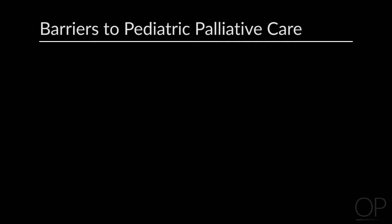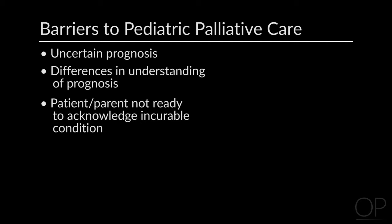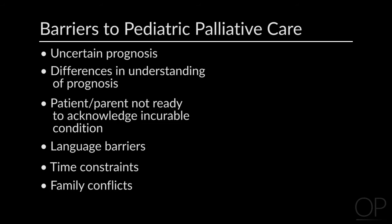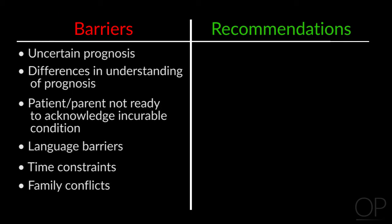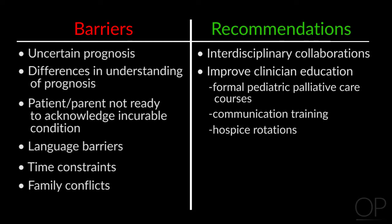Studies have shown that common barriers to pediatric palliative care and advanced care discussions include uncertain prognosis, differences between clinician and patient or parent understanding of prognosis, the patient or parent is not ready to acknowledge an incurable condition, language barriers, time constraints, and conflicts within the family. Recommendations to overcome these barriers include interdisciplinary collaboration to optimize care and increase clinician education, such as more formal courses in pediatric palliative care, communication training, and hospice rotations.